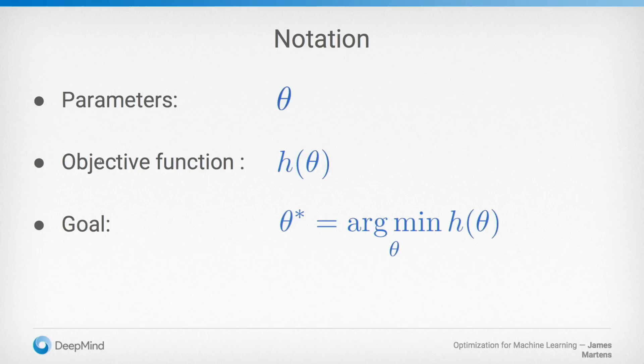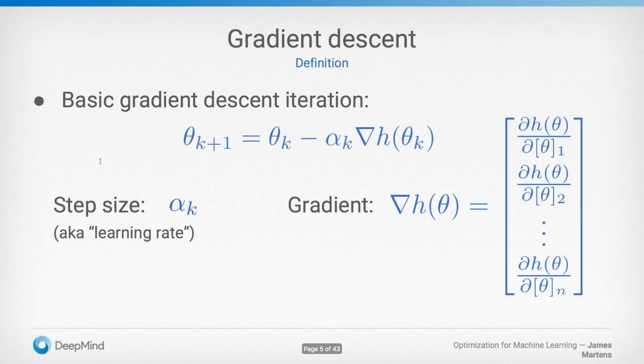Gradient descent, which is the standard method, is quite simple: you just update your parameters by taking a negative step in the direction of the gradient, defined as a vector of partial derivatives. Alpha is called the step size — also called the learning rate depending on which literature you're reading — and it controls how aggressively you move in that direction.